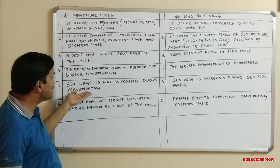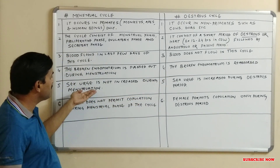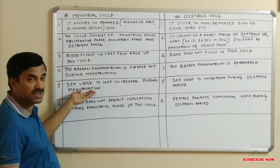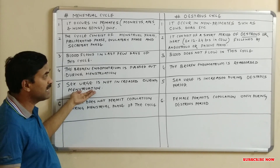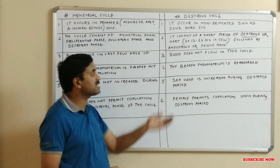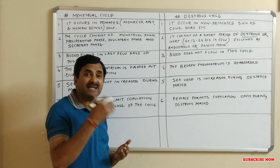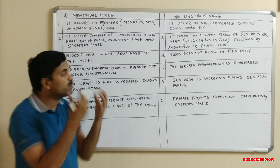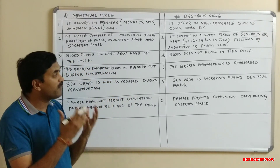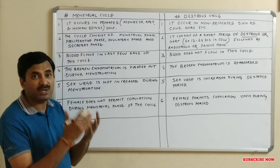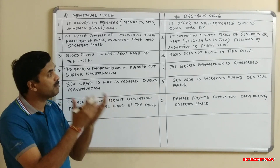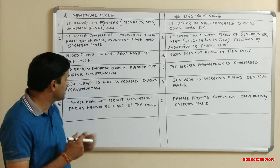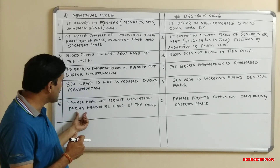The fifth difference is that in the menstrual cycle, the sex urge is not increased in the female. But in the estrous cycle, during the estrous or heat period, the sex urge is greatly increased, and the female attracts the male for coitus or copulation.